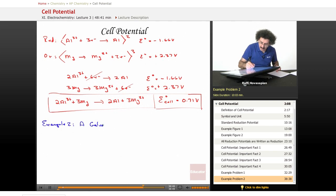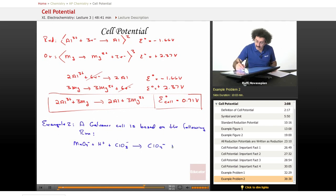A galvanic cell is based on the following reaction: MnO4 minus plus H plus plus ClO3 minus becomes ClO4 minus plus Mn2 plus plus H2O.